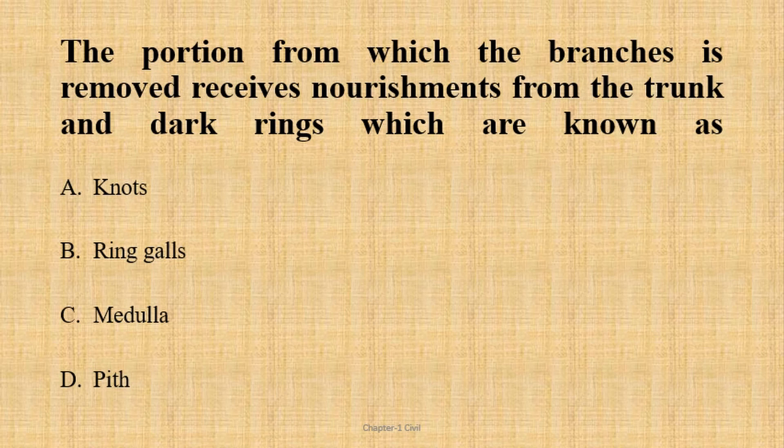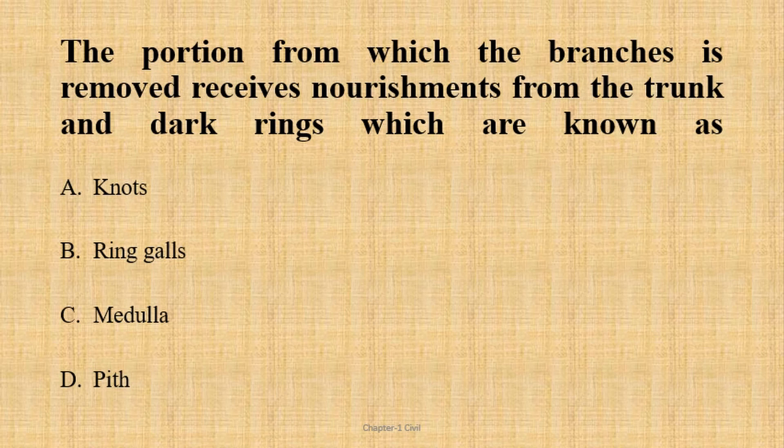The portion from which the branches are removed receives nourishment from the trunk, and dark rings are known as knots or ring knots. There is a question of direct definition. Medulla or Pitha is not a defect — it is a cross section.